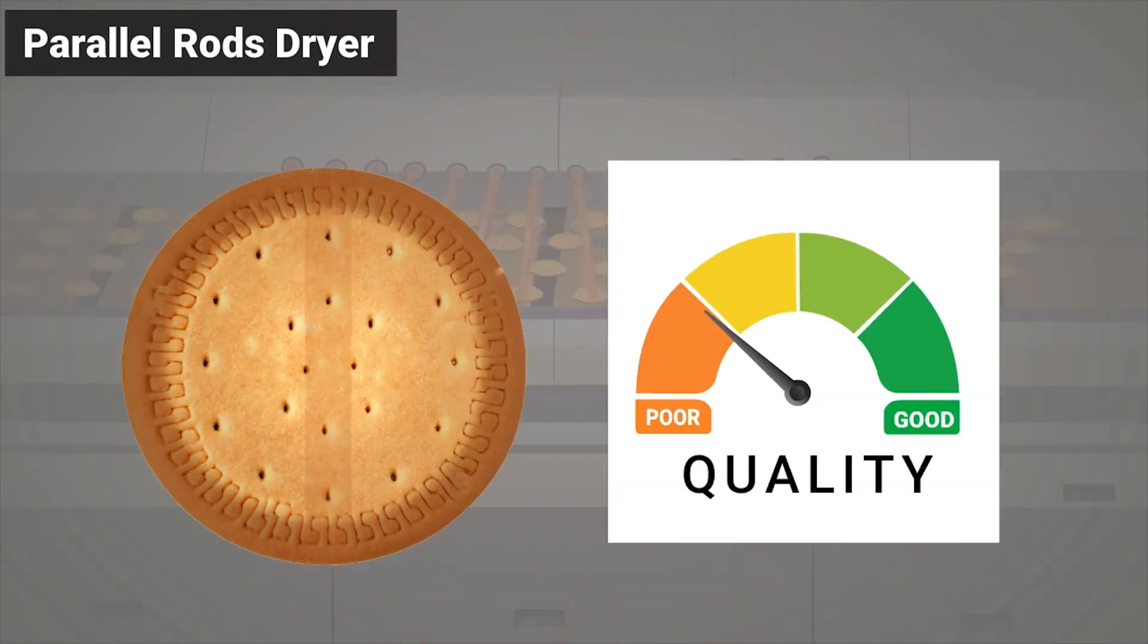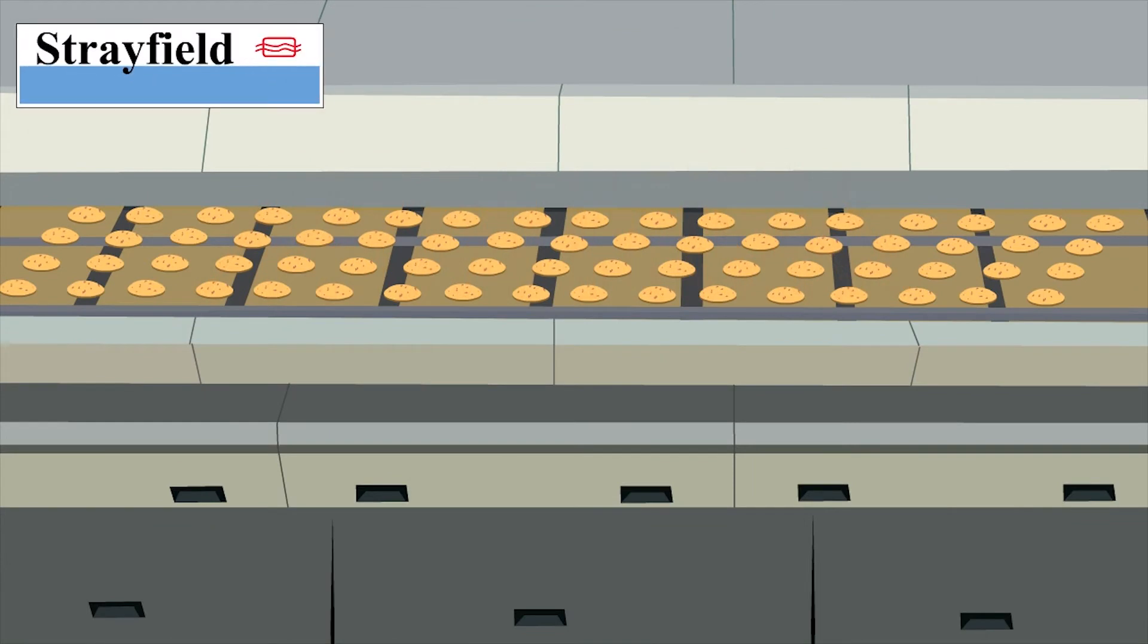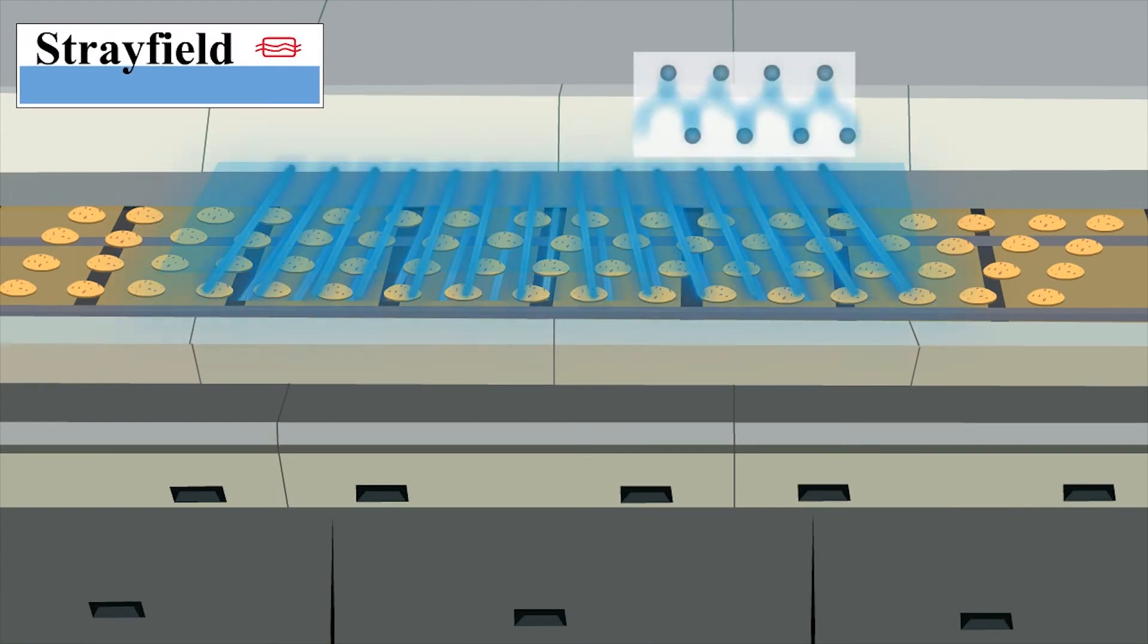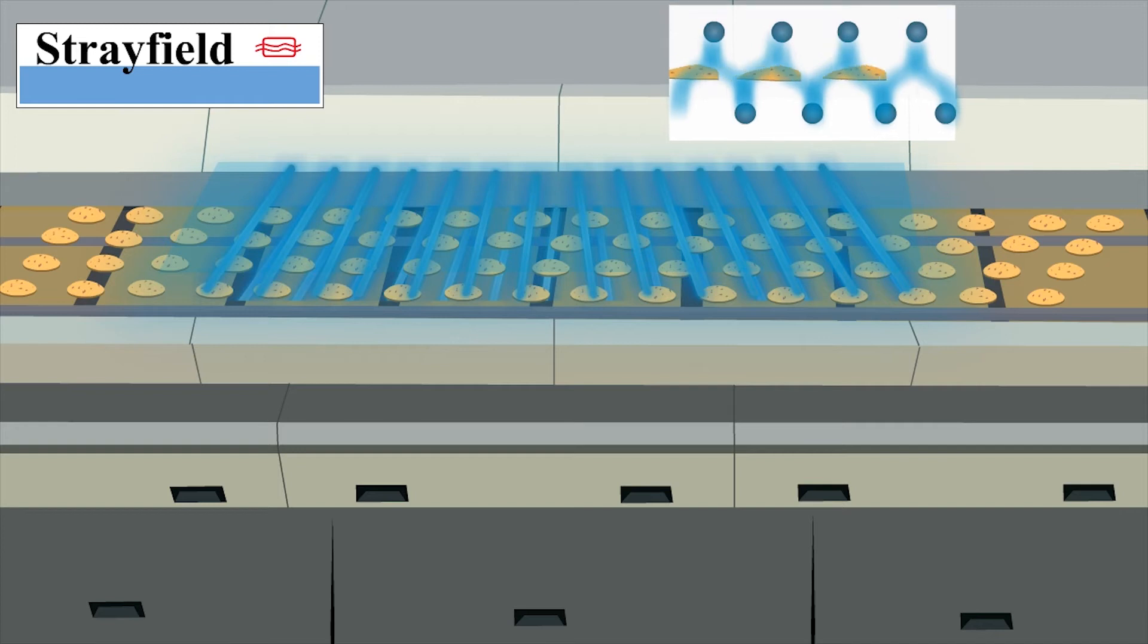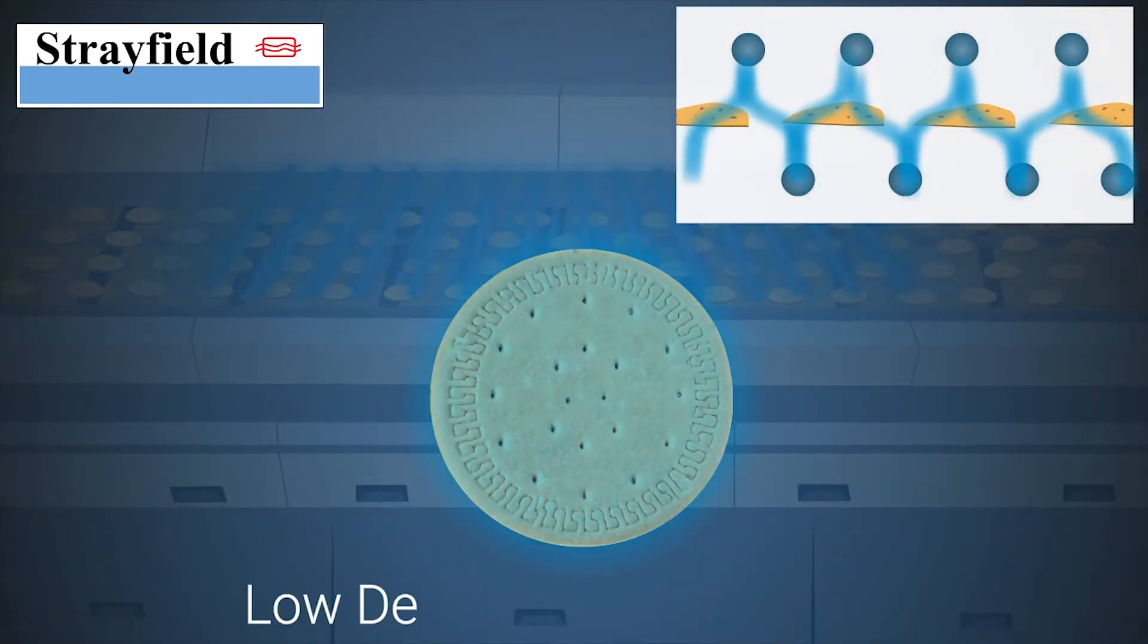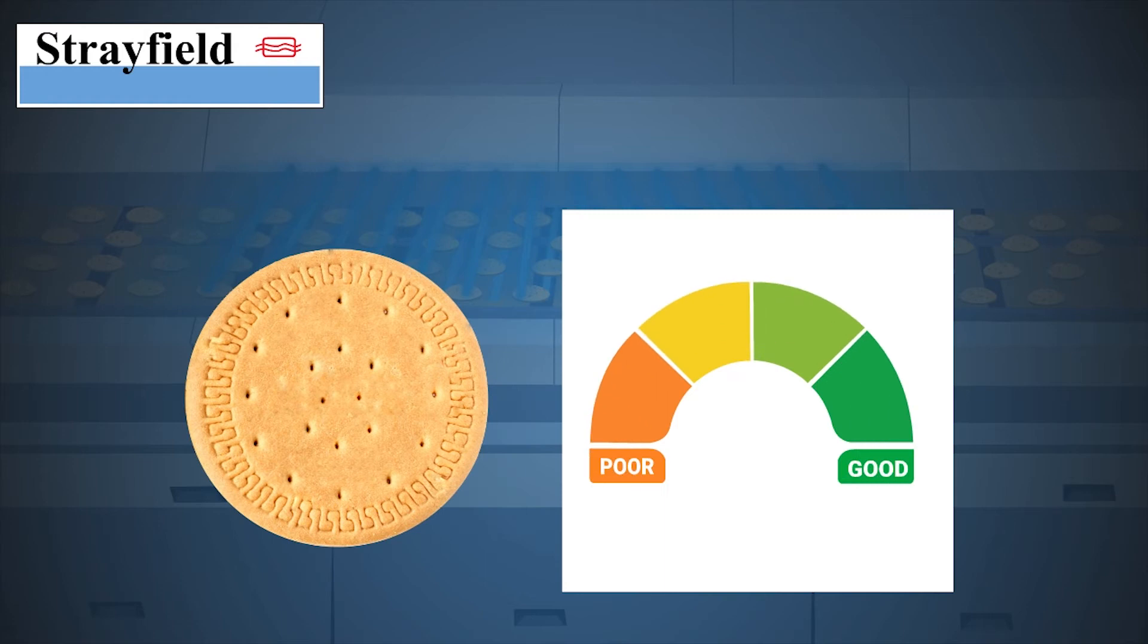Strayfield Dryer's superior through-field electrode technology helps keep such problems at bay by creating a low-density, uniform RF field that passes through the product.